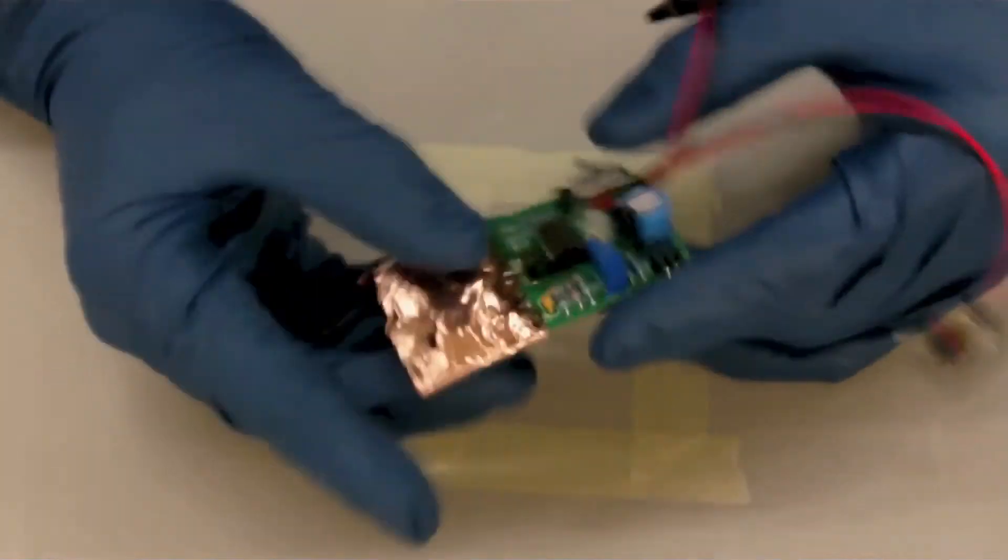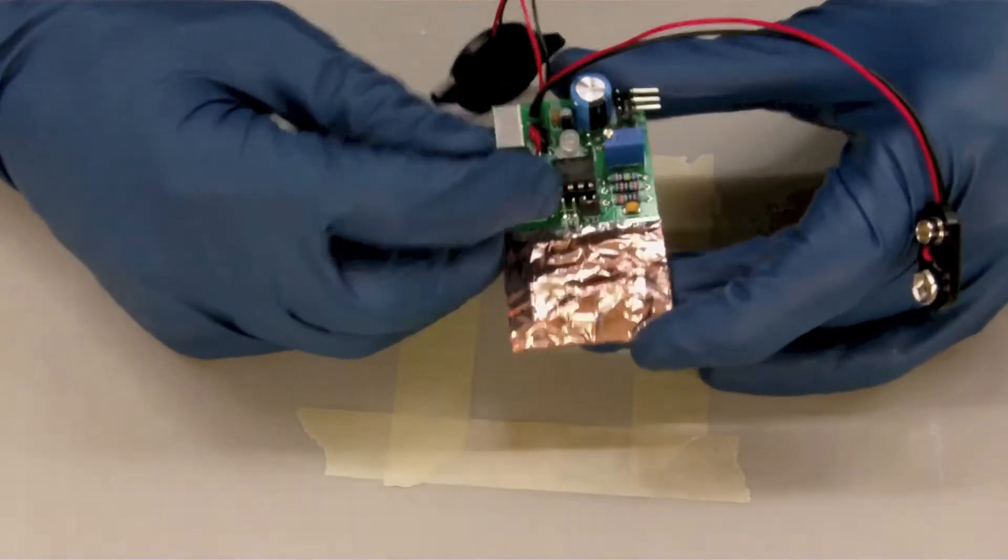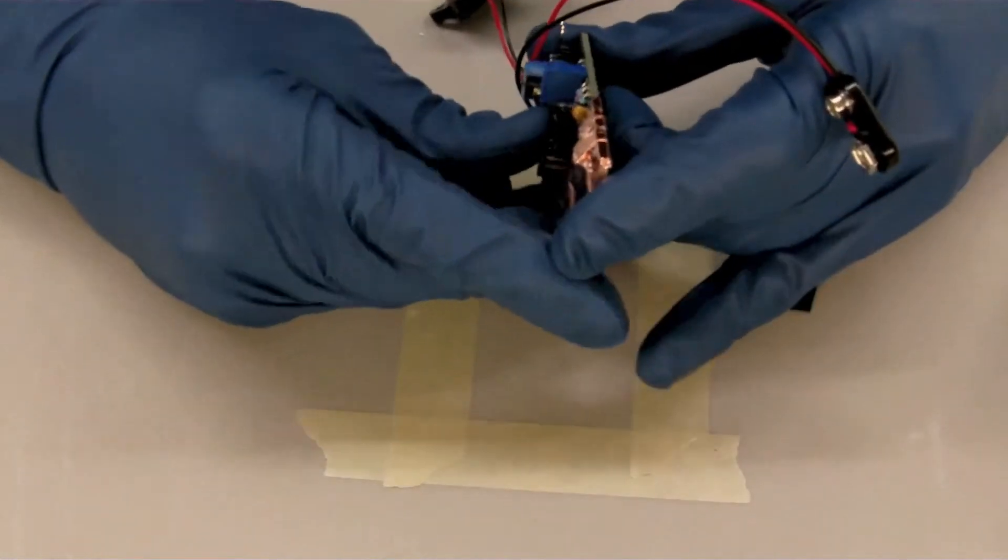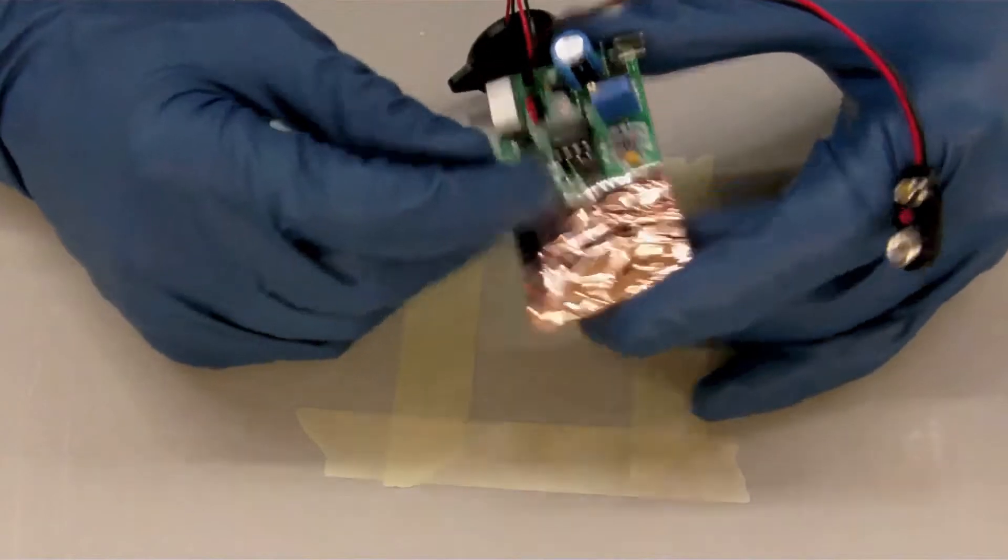And then in terms of orientation, this dot corresponds to that notch on the socket and that notch on the silkscreen. So just be aware. That dot indicates pin one of the IC.